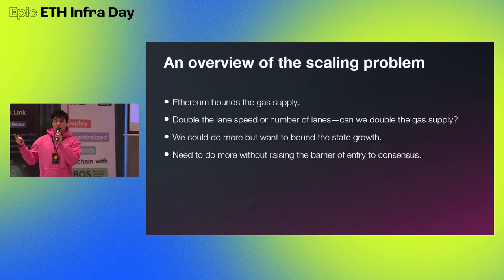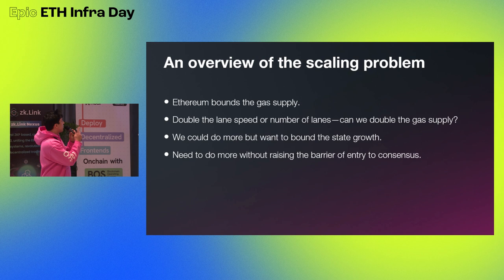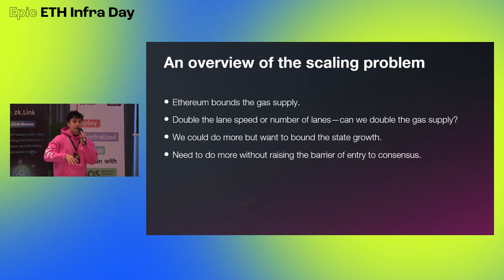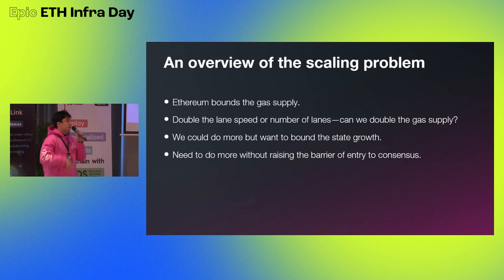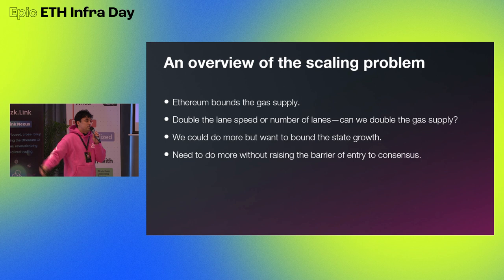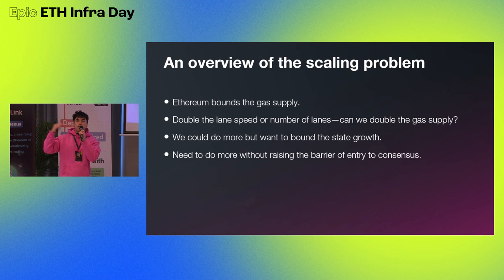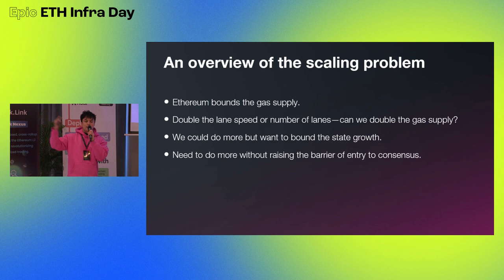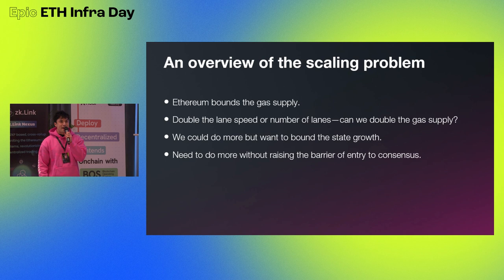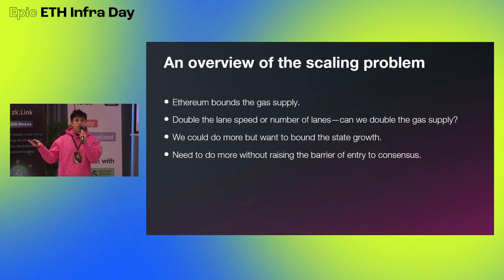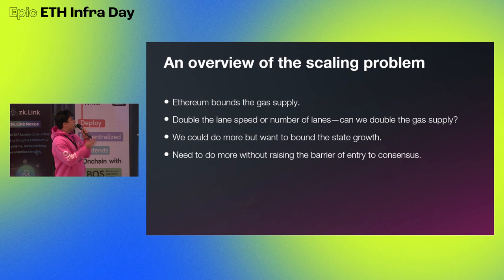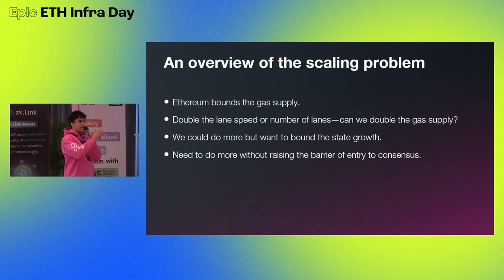There's only so much gas, so the throughput of Ethereum is bottlenecked by this bounded gas supply. There are a few ways to enable more cars moving around. One way: if you can double the speed the cars are going, you can allow double the traffic — so if you could double the single-thread performance of the EVM, you could double the throughput. Another way is just doubling the number of lanes. But the key insight is: even if we doubled the lane speed or doubled throughput, it actually doesn't make Ethereum scaling any better.